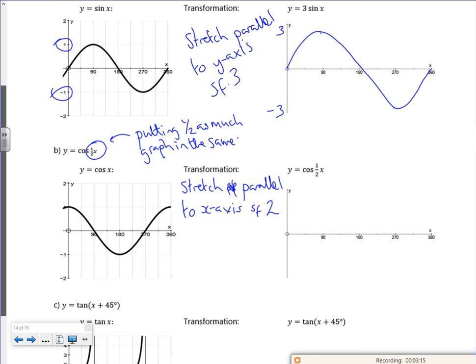So I'm cramming half as much graph into the same space. Essentially, I'm doubling all the x values. So instead of going from 0 to 360, I'm going to stop there, but it's just going to be stretched out. So I double it all.